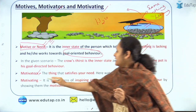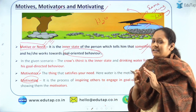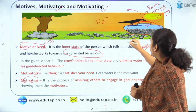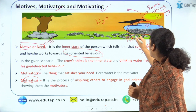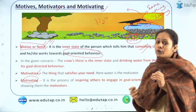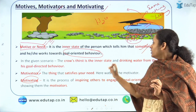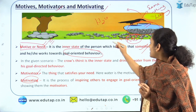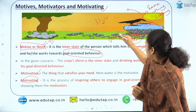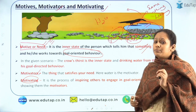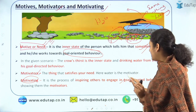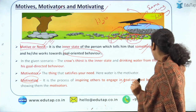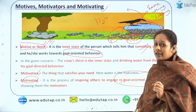What is motivating? Let's take another example. Let's say you are preparing very hard to clear your RBI exam, and looking at your hard work, your fellow aspirants or teammates also start working hard. That process is known as motivating — that is, you are inspiring others to engage in goal-oriented behavior.